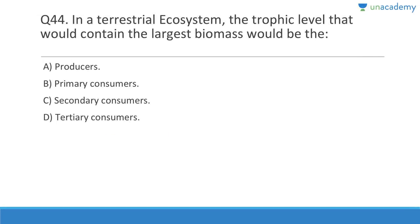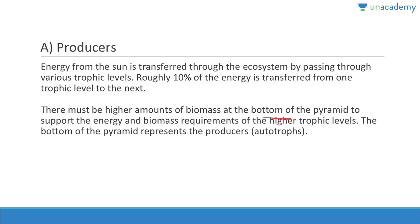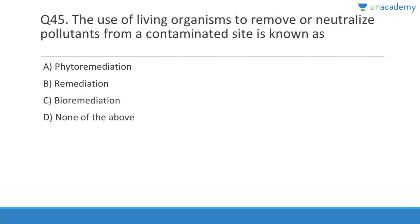Question 44: In a terrestrial ecosystem, the trophic level containing the largest biomass would be the producers. Energy from the sun is transferred through the ecosystem by passing through various trophic levels, and roughly 10% of the energy is transferred from one trophic level to the next. There must be a higher amount of biomass at the bottom of the pyramid to support the energy and biomass requirements at higher trophic levels. The bottom represents producers or autotrophs.